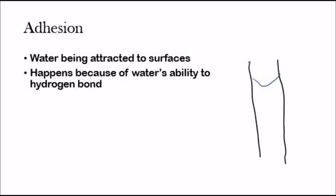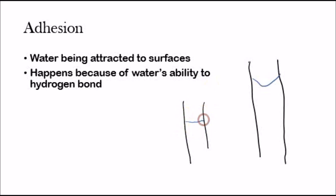Instead of the water just being flat, what's going to happen is that the water will actually stick to the sides of the container because of adhesion. So that's an example of adhesion. Basically, water being attracted to different surfaces is adhesion, and cohesion is water being attracted to itself.